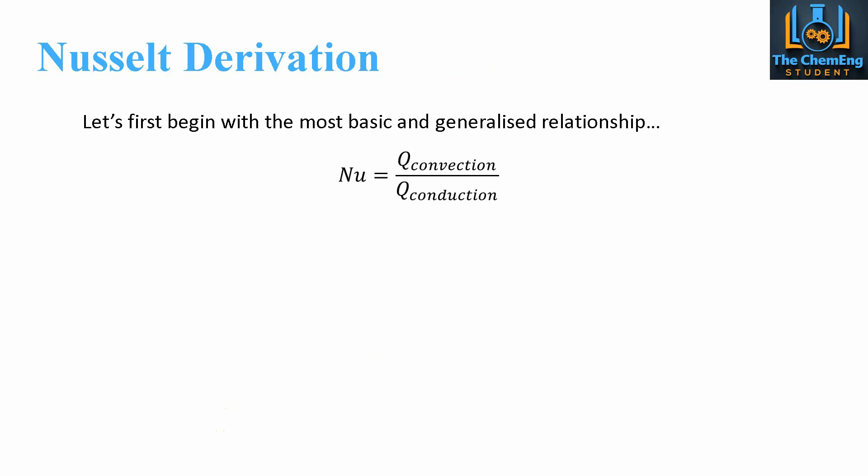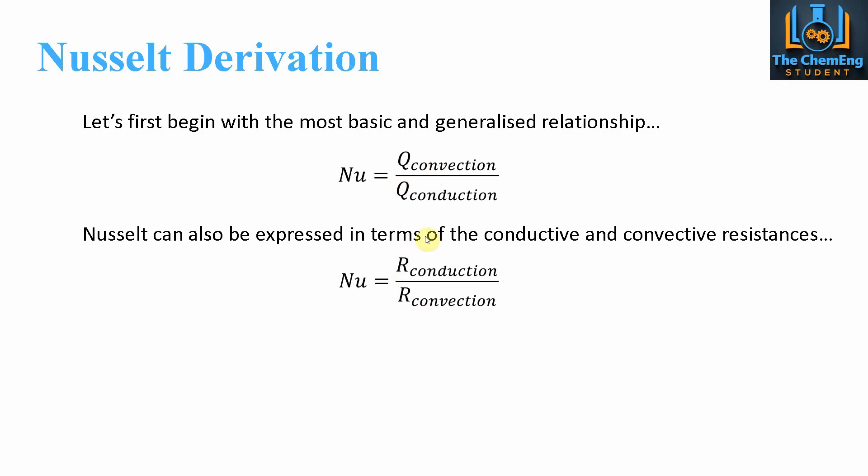So as we said before, the Nusselt number can be expressed as Q convection divided by Q conduction. That's in its most basic terms. But we can also express this in terms of the conductive and convective resistances. In most terms we consider it in terms of the Q values. For resistances we have to invert our numerator and denominator when we compare it to the Q value. Notice that in terms of Q convection and Q conduction, convection is on the numerator and conduction is on the denominator. But when we talk about resistances, in order for this to be valid we have to invert our conduction and convection.